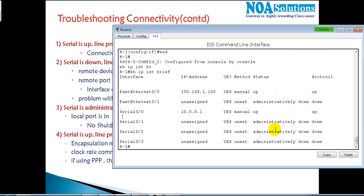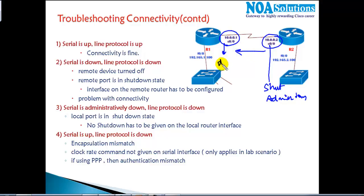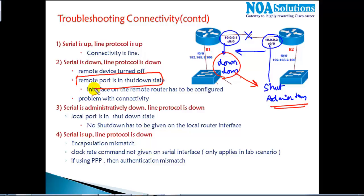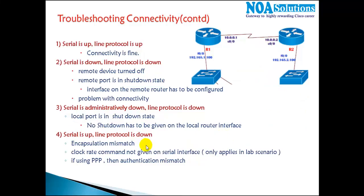Whenever you see 'administratively down', it means the local port is in shutdown state. Remember the distinction: if the remote port is in shutdown state, on the remote side you see 'administratively down', but on the opposite (local) side you will see 'down down'. So on the local port you see 'administratively down', and on the remote port you see 'down down'. There is also one more status message — 'up and down' — which I'll come back to after discussing some WAN protocols and authentication.